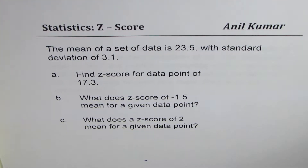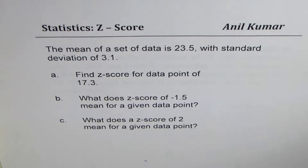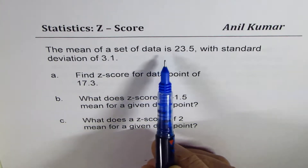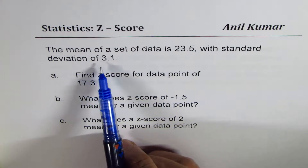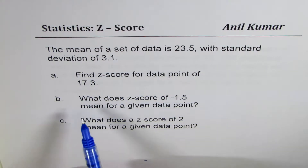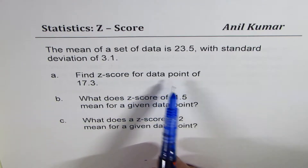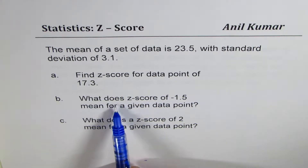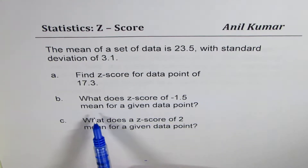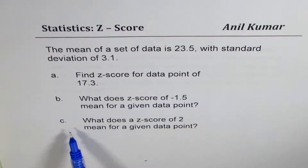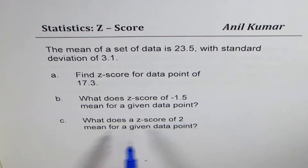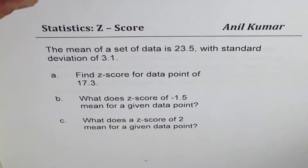I'm Anil Kumar. In this video we will learn what is z-score and how we can apply it. I have two questions. The first one: the mean of a set of data is 23.5 with standard deviation of 3.1. There are three parts: (a) find z-score for data point 17.3, (b) what does a z-score of minus 1.5 mean for the given data point, (c) what does a z-score of 2 mean for a given data point. You can always pause the video, answer the question, and then look at my suggestions.